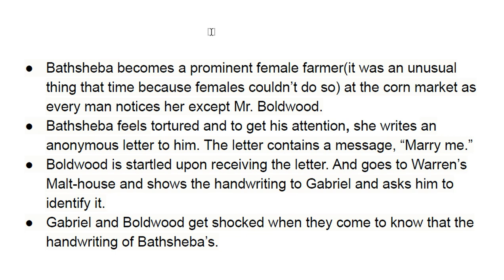Bathsheba became a prominent female farmer, which was an unusual thing at that time because females couldn't do so. She was a prominent farmer at the corn market and every man notices her except Mr. Boldwood. Bathsheba feels hurt in her ego and in order to get his attention she writes an anonymous letter to him containing the message 'Marry me.' Boldwood is startled upon receiving this letter and goes to Warren Malthouse and shows the handwriting to Gabriel. They are both shocked when they find out the handwriting belongs to Bathsheba.